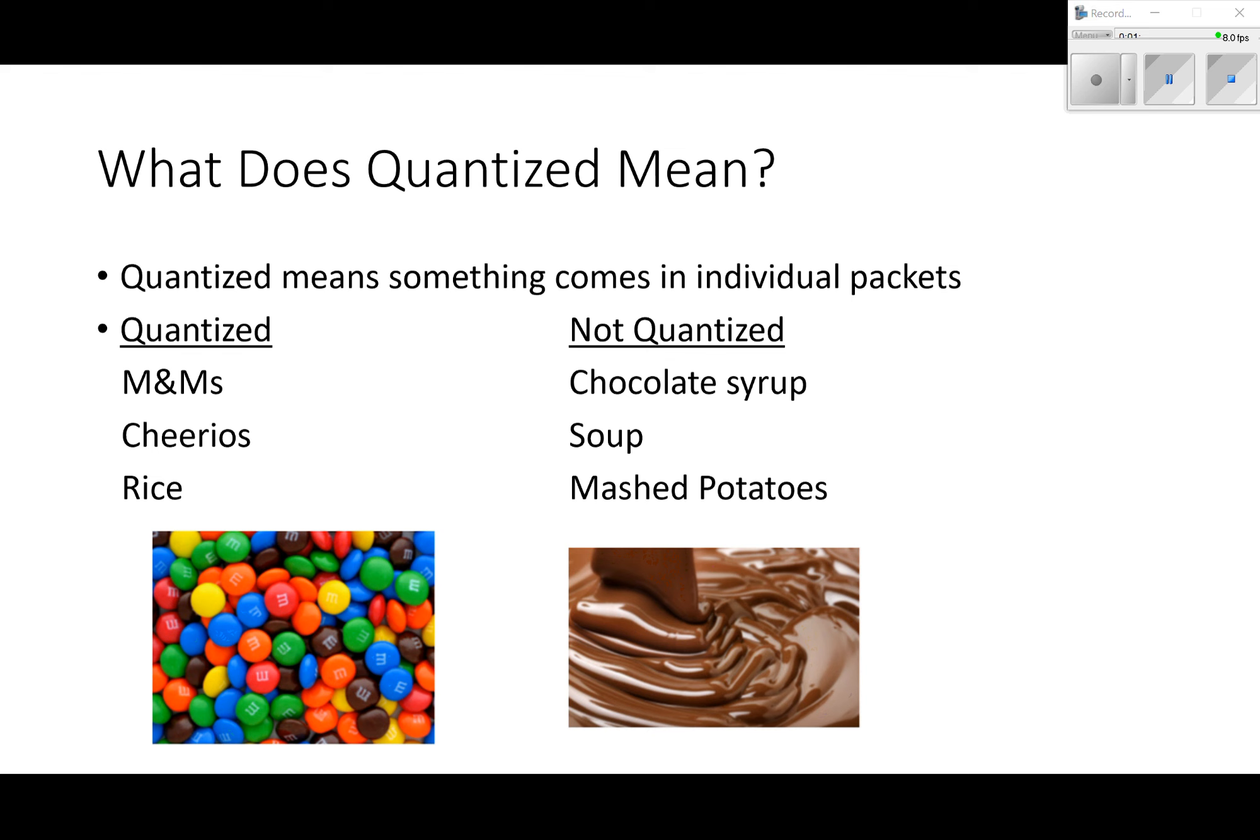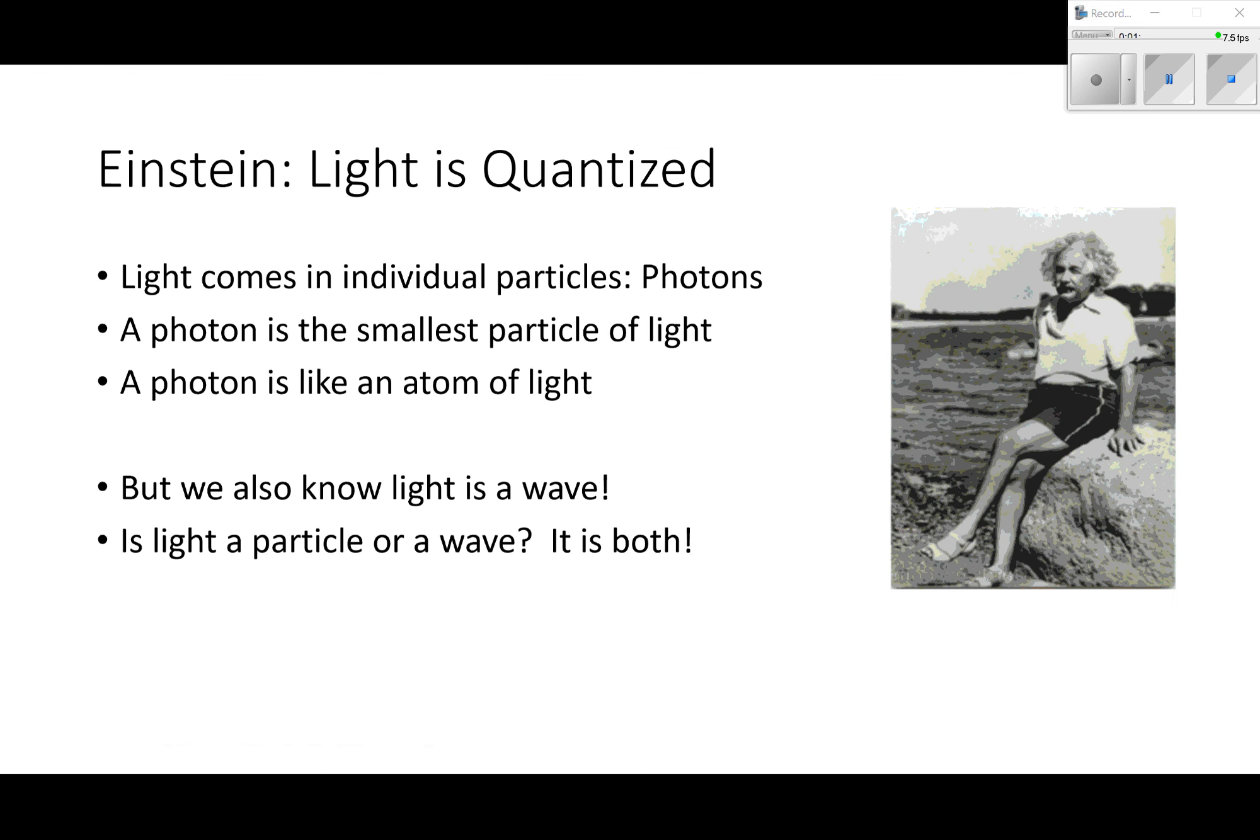Einstein comes along and says that light is quantized, that light is countable, that you can count the number of light. Light comes in individual particles called photons. A photon is the smallest particle of light, it's like an atom of light. And we also know that light is a wave. We just finished a unit on electromagnetic waves. Light is a wave. So is light a particle or is it a wave? The answer is it's both.